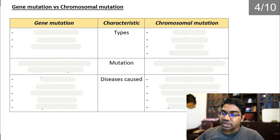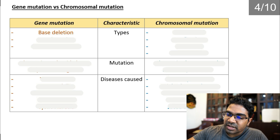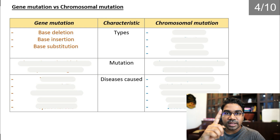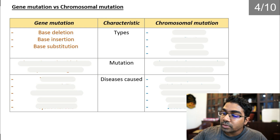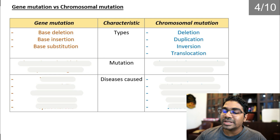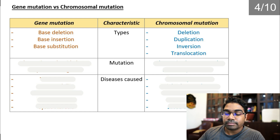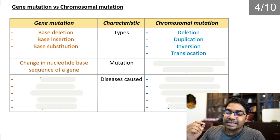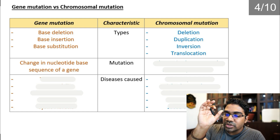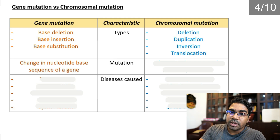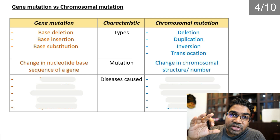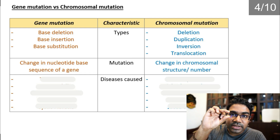Let's compare gene mutation and chromosomal mutation. The types of gene mutation are base deletion, base insertion, and base substitution — everything involves just a single base. In chromosomal mutation we have deletion, duplication, inversion, and translocation. The mutation in gene mutation is a change in the nucleotide base sequence of a gene by only one base, whereas in chromosomal mutation it is a change in the chromosomal structure or number involving more than just a single base.